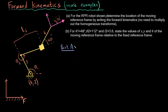Before moving to Part a, let me draw out the moving frames at each joint. The first moving frame M1 has its x-axis pointing here and y-axis pointing here. The second moving frame M2 has its x-axis along this link and y-axis perpendicular. The third, M3, has its x-axis along this link, and the fourth, M4, is the final frame already given.